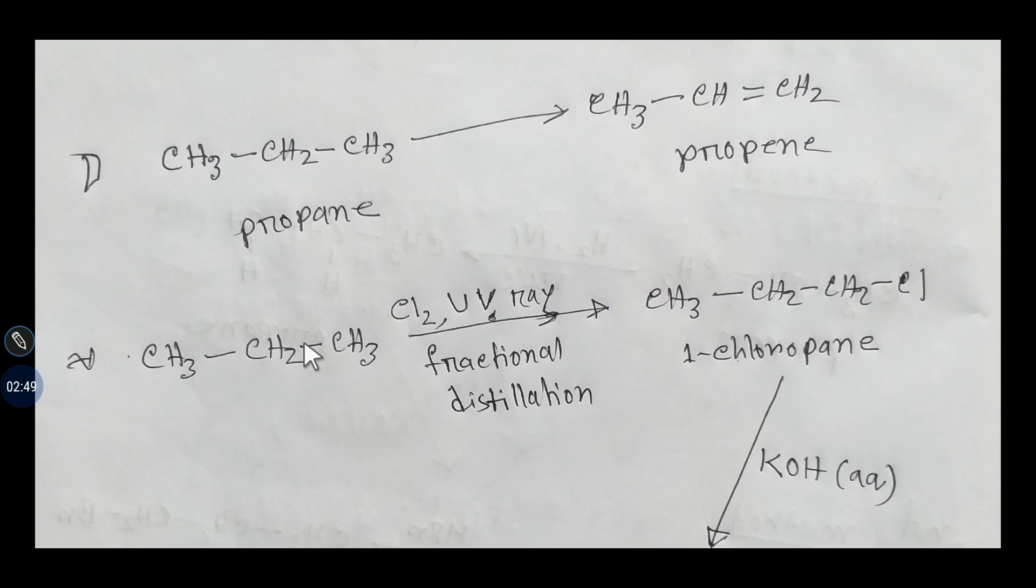If you add chlorine in presence of UV light, then you will get one chloropropane with some other products. That will be separated by fractional distillation.